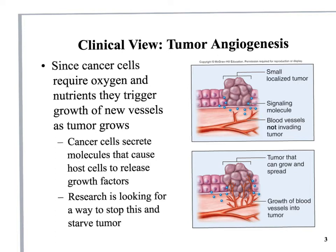Cancer cells need oxygen, they need to get rid of waste, they need glucose and growth factors — the same things normal cells get from the blood. So tumor cells will also stimulate the production of angiogenesis, of new blood vessels. This is a big area of research in cancer therapy: how can we selectively cut off the blood supply to tumor cells and starve them out while normal cells continue to grow? If we can stop that, we can help control the growth of tumors.